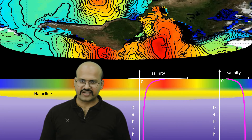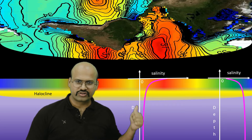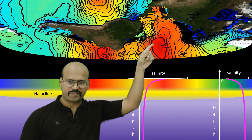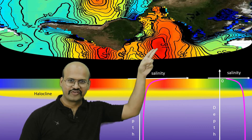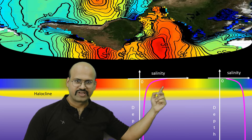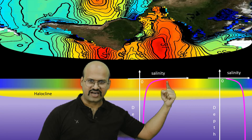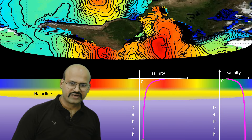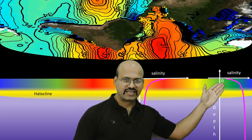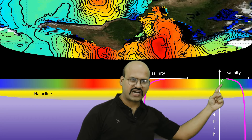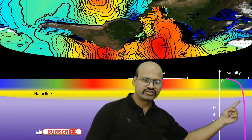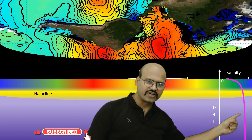High-salinity water, being more dense, is located in the lower parts of the oceans, creating a vertical stratification based on salinity. In the tropical regions, salinity is higher at the surface — indicated by red color — and it decreases as we go deeper, becoming constant after a while. In the polar regions, salinity at the surface is less, so we start from low-salinity water at the surface, and as we go deeper the salinity increases, then becomes constant.